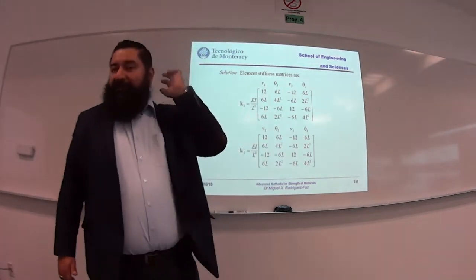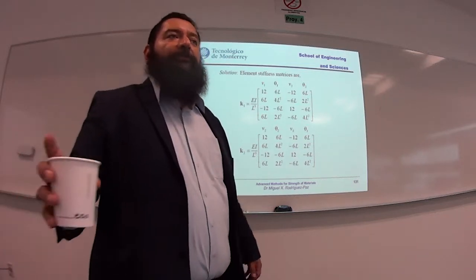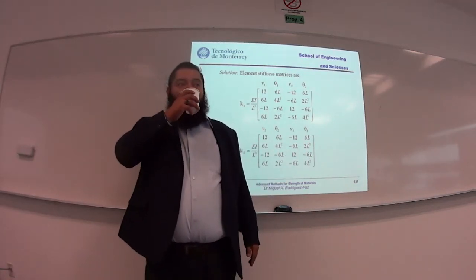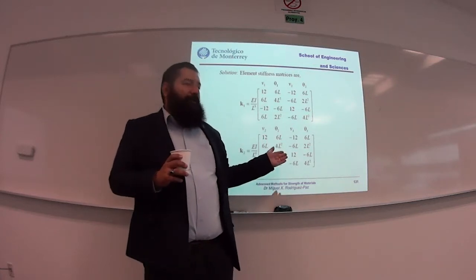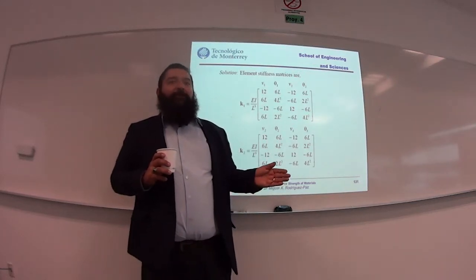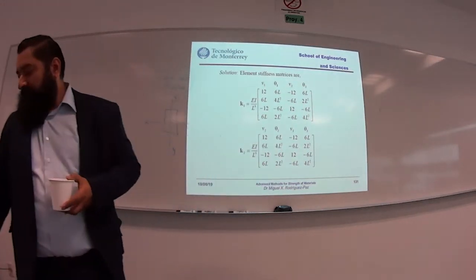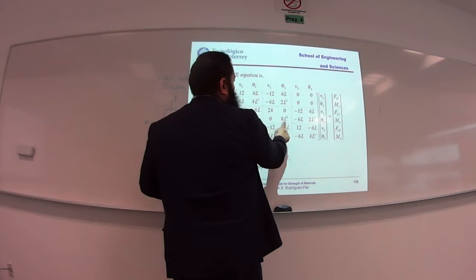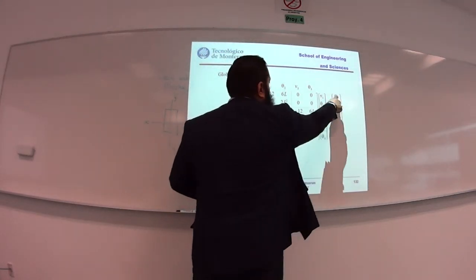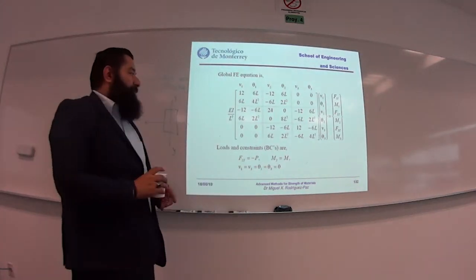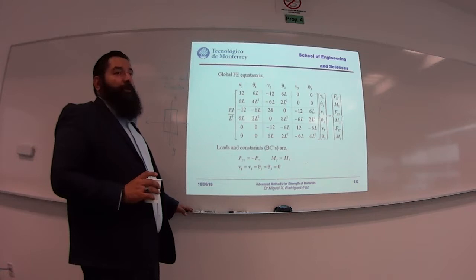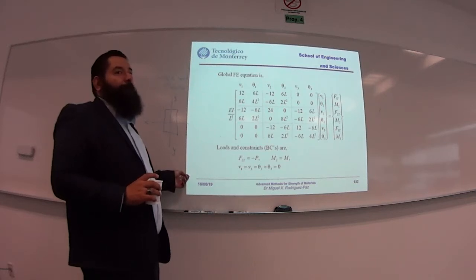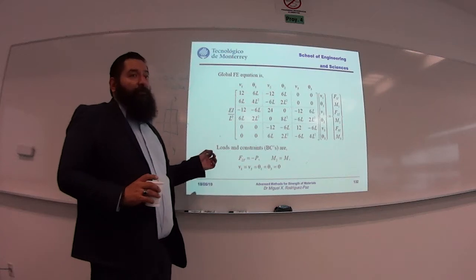What is the next step? When we have local stiffness matrices, we assemble the global stiffness matrix. That process is called the assembly of the global stiffness matrix, by mapping the local ones into the global one. What we get is the global finite element equation, with the degrees of freedom overlapping at the shared node. We have only two elements to represent the whole beam because we only have two sections.